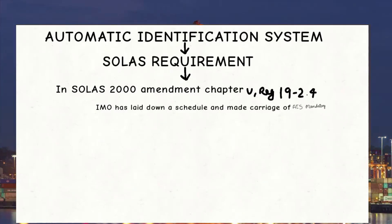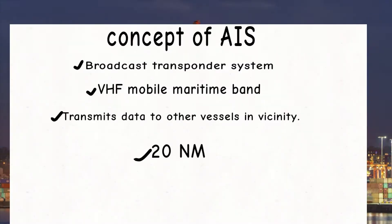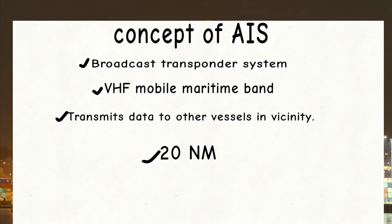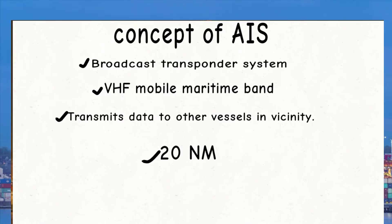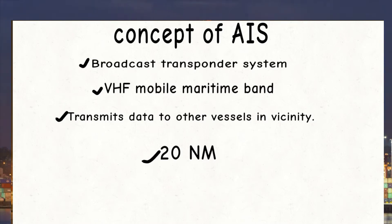Now let us see the concept of AIS. It is a ship-board broadcast transponder system which operates in the VHF mobile maritime band. Through this band, ships continuously transmit data to the other vessels in the vicinity. The system coverage range is similar to that of VHF application and it depends on the height of the antenna. The typical value to be expected at sea is nominally 20 nautical miles.